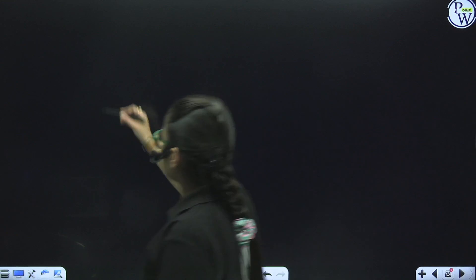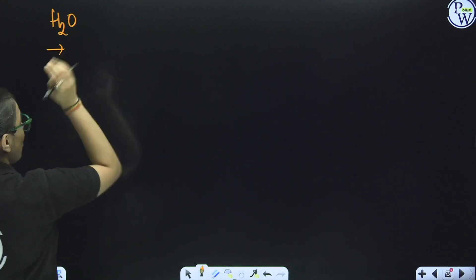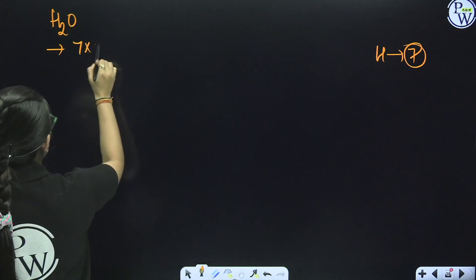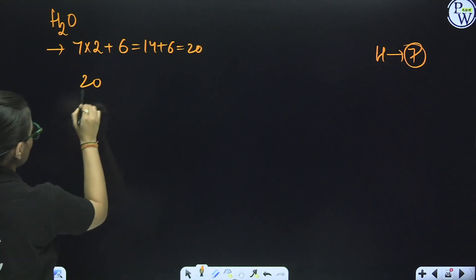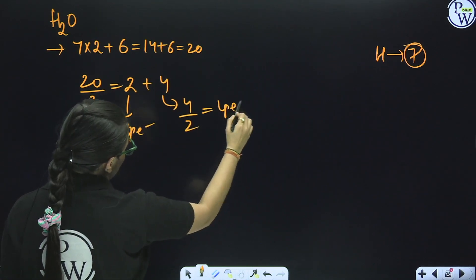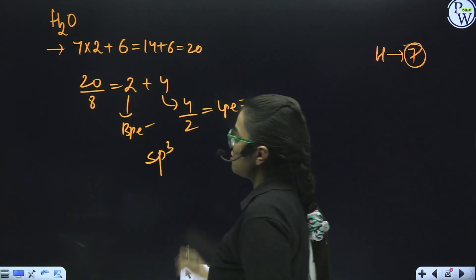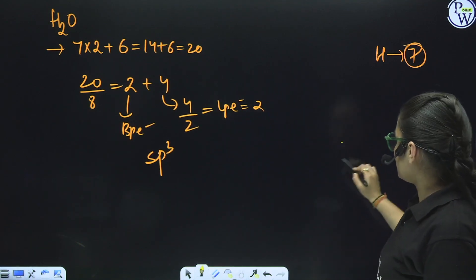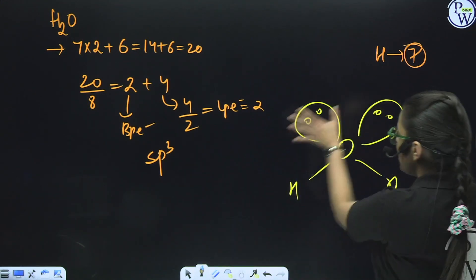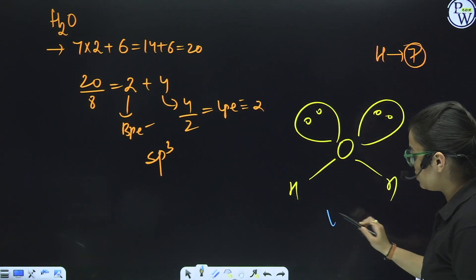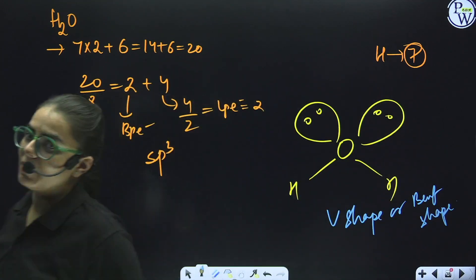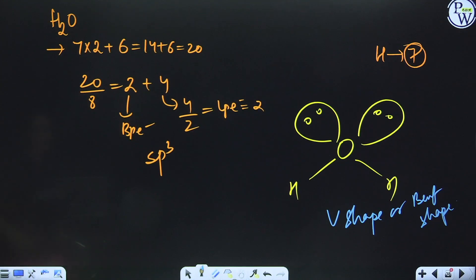Another example: water (H₂O). When applying VSEPR theory, take 7 electrons for hydrogen. So 7×2 = 14 for hydrogens plus 6 for oxygen = 20 total. Divide by 8: quotient 2 (bond pairs), remainder 4 ÷ 2 = 2 lone pairs. Sum 2+2 = 4 → sp³, which would suggest tetrahedral. But oxygen has 2 lone pairs, so when we cover the lone pairs, the visible shape is a V-shape (bent shape), not tetrahedral. This shows that when lone pairs are present, the geometry changes.